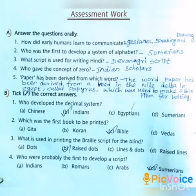Second question: Who was the first to develop a system of alphabet? Answer: The Sumerians were the first to develop a system of alphabet.